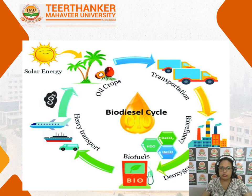This picture shows how plants grow utilizing solar energy. Oil is extracted from different oil crops and used for biodiesel production. Biodiesel can then be used for different transportation and industrial purposes, including heavy transport and airplanes.